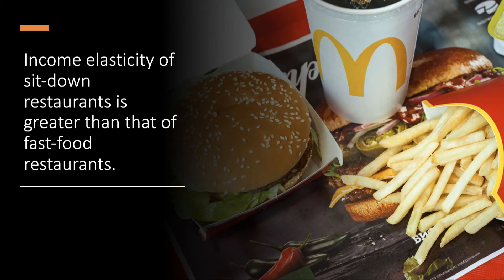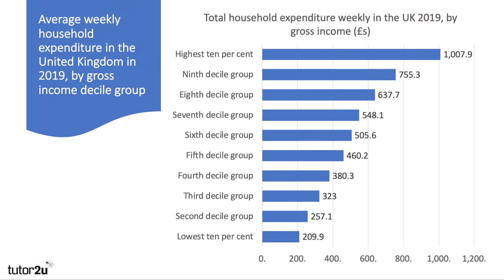The income elasticity of demand for sit-down restaurants is higher than that of fast food restaurants — most of the empirical evidence suggests that, although it probably isn't particularly high. It's quite interesting just thinking about this link between income and consumption.